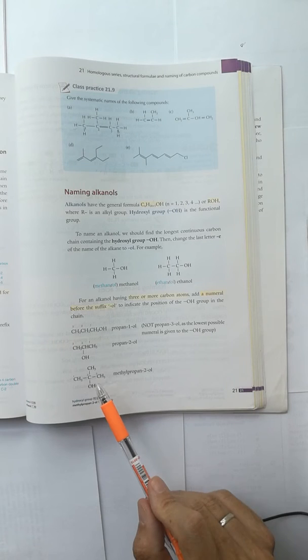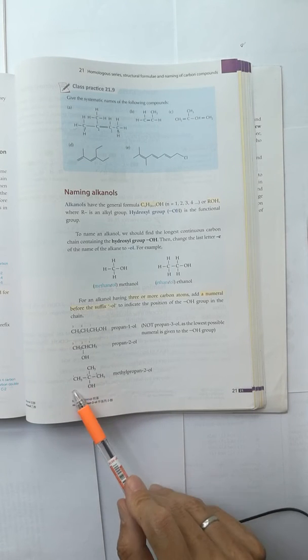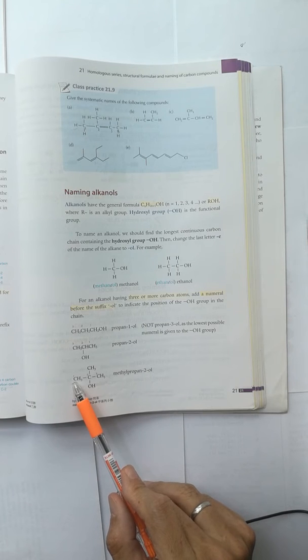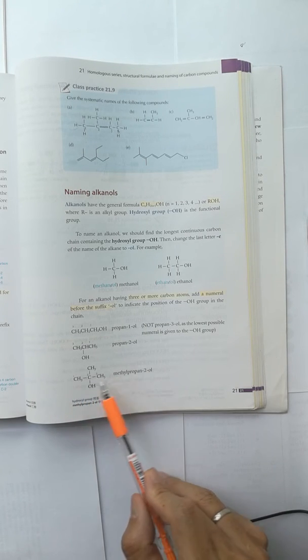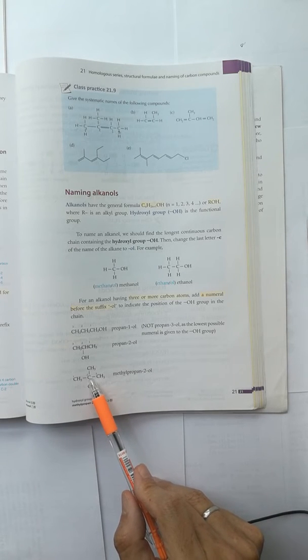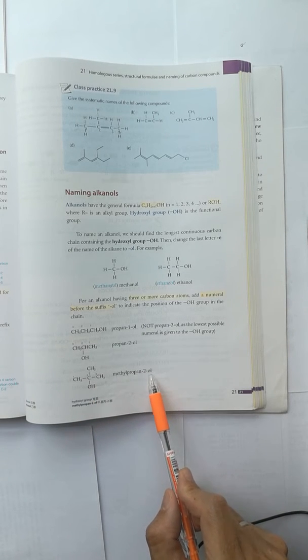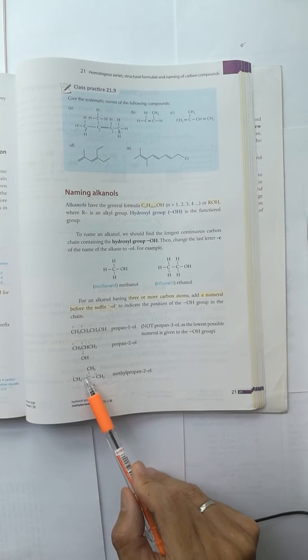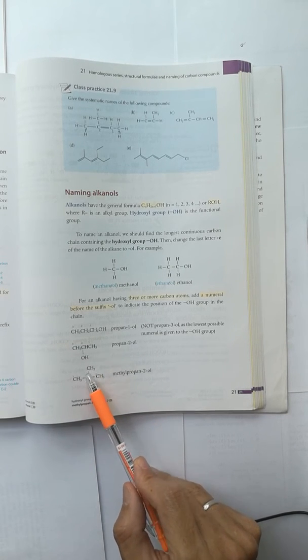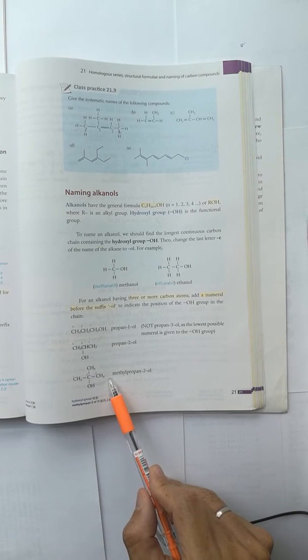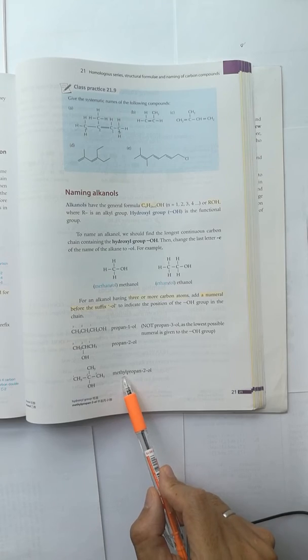And this example is a 3 carbon chain, no double bond, propane. OH is drawn to the middle carbon, 2-ol. O is a vowel, so E is omitted. And the methyl group is always drawn to the second carbon, so no position for the methyl group.